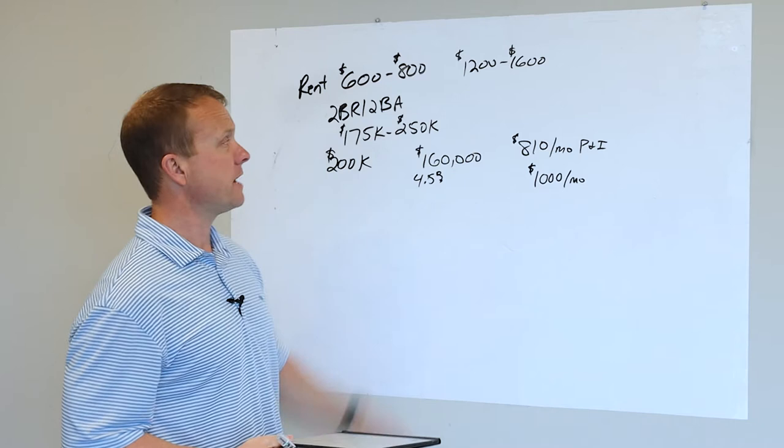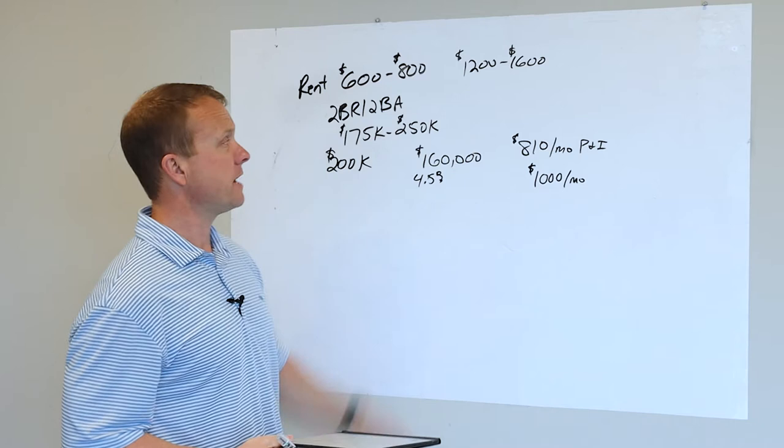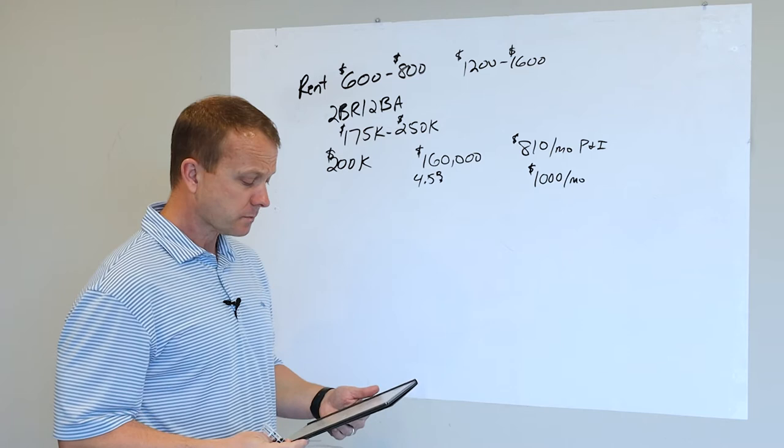So if the roommate's paying $600, $700, $800 per month, then that's going to offset your monthly payment that you're making here. So that's the first benefit.